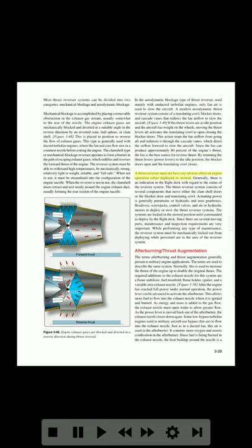A thrust reverser must not have any adverse effect on engine operation either deployed or stowed. Generally, there is an indication in the flight deck with regard to the status of the reverser system. The thrust reverser system consists of several components that move either the clamshell doors or the blocker door and translating cowl. Actuating power is generally pneumatic or hydraulic and uses gearboxes, flex drives, screw jacks, control valves, and air or hydraulic motors to deploy or stow the thrust reverser systems. The systems are locked in the stowed position until commanded to deploy by the flight deck. Since there are several moving parts, maintenance and inspection requirements are very important. While performing any type of maintenance, the reverser system must be mechanically locked out from deploying while personnel are in the area of the reverser system.